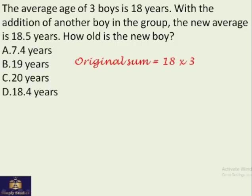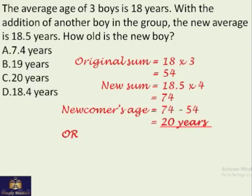So there are two methods of doing this. The first method is find out the differences in sums. What's the original sum? There were three boys, 18 years average age. So the original sum must be 18 times 3. That is 54. And the new sum is 18.5 is the new average. And there are four boys. So it gives you 74. It means this 54 became 74 just because of the arrival of the new boy. That's his age. The difference. It means the newcomer's age is 20 years.